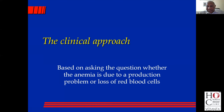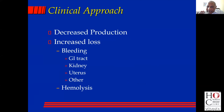The second approach is the clinical approach. This is what I prefer, where you ask the question: is this anemia due to a production problem or is it due to a loss problem? That's the fundamental question you ask. Any cytopenia in the blood can only be due to two reasons — decreased production or increased loss.